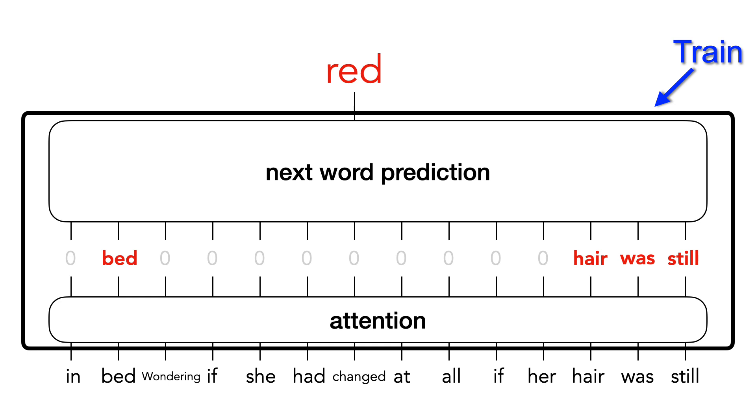For example, say the network predicts brown instead of red. Brown doesn't rhyme with bed, so the back propagation algorithm might try to increase the attention on bed and decrease weights that led to the selection of brown.